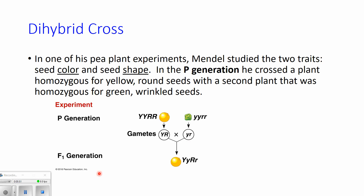In one of Mendel's many dihybrid experiments, he cross-pollinated a pea plant that had green wrinkled seeds with another plant that had round yellow seeds. This involves two separate traits: the color of the seeds — some pea plants produce yellow seeds, others produce dark green seeds — and also seed shape. When you see a wrinkled pea, that doesn't just mean it dried up; this is an actual genetic trait. Some pea plants produce smooth round pea shapes and other pea plants produce a wrinkly shape.